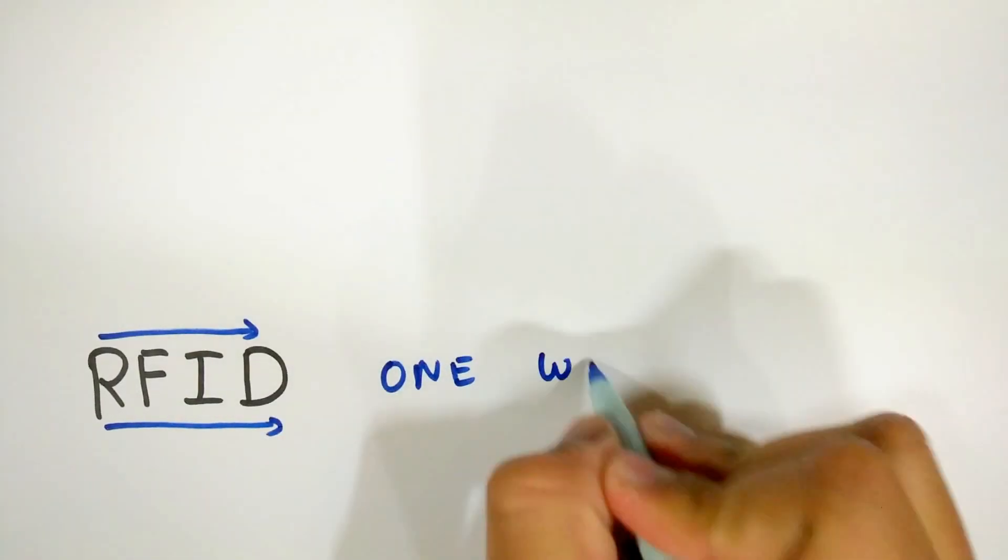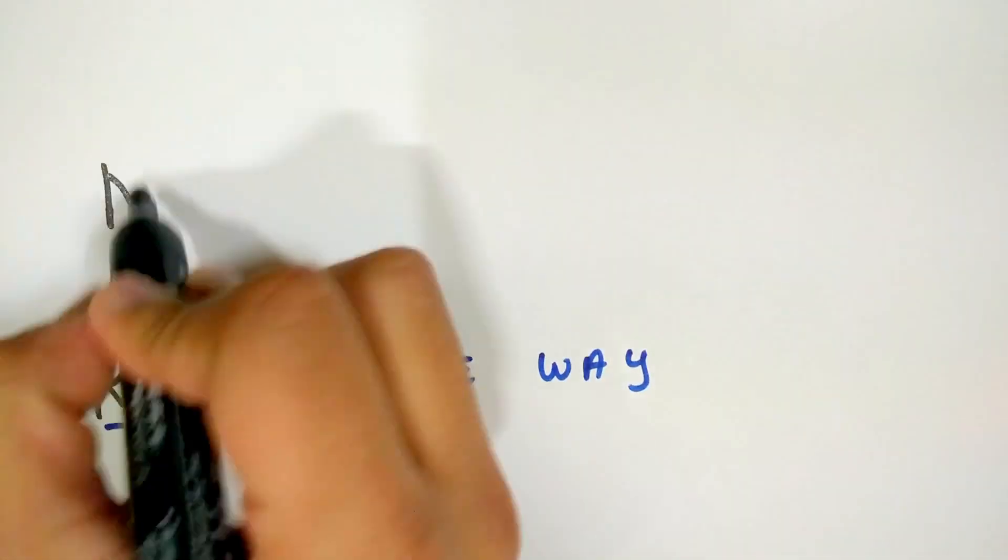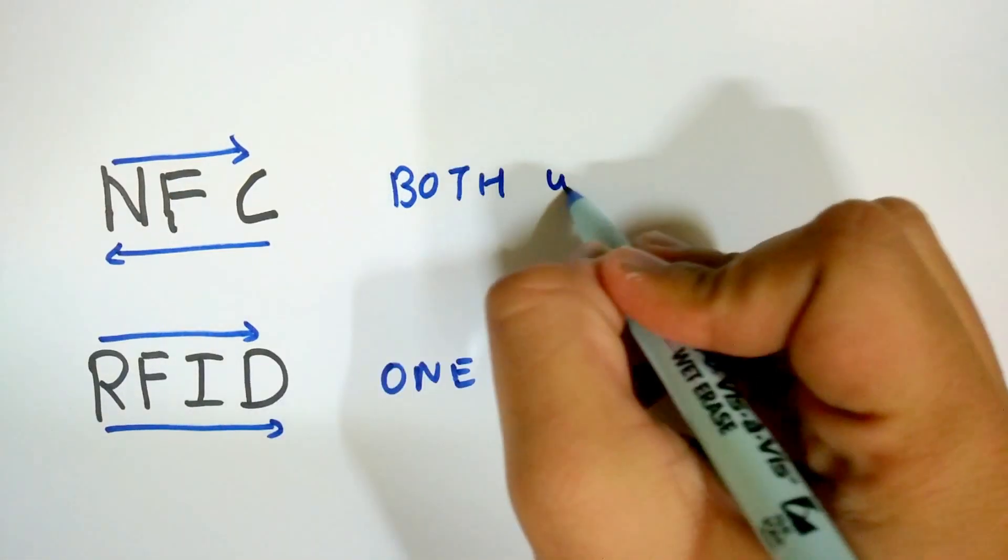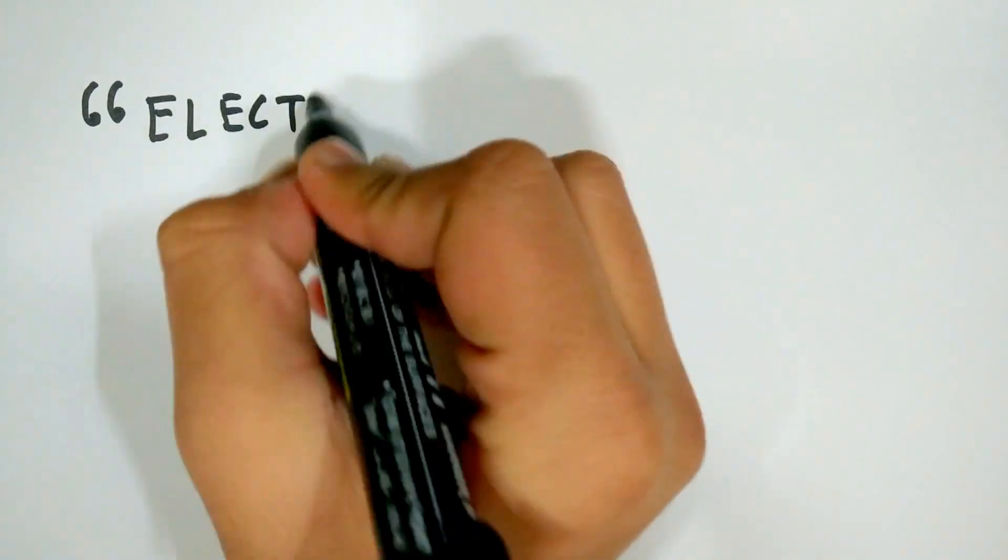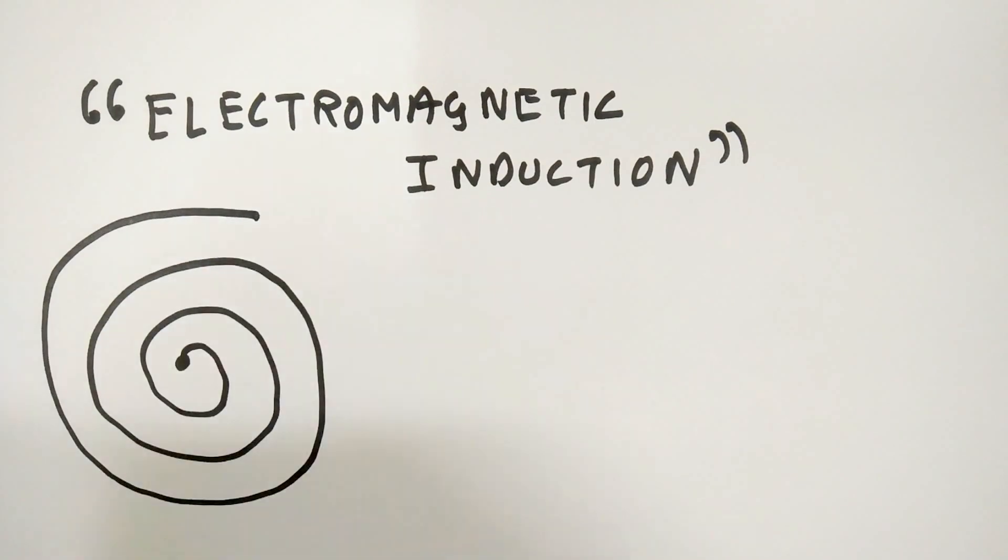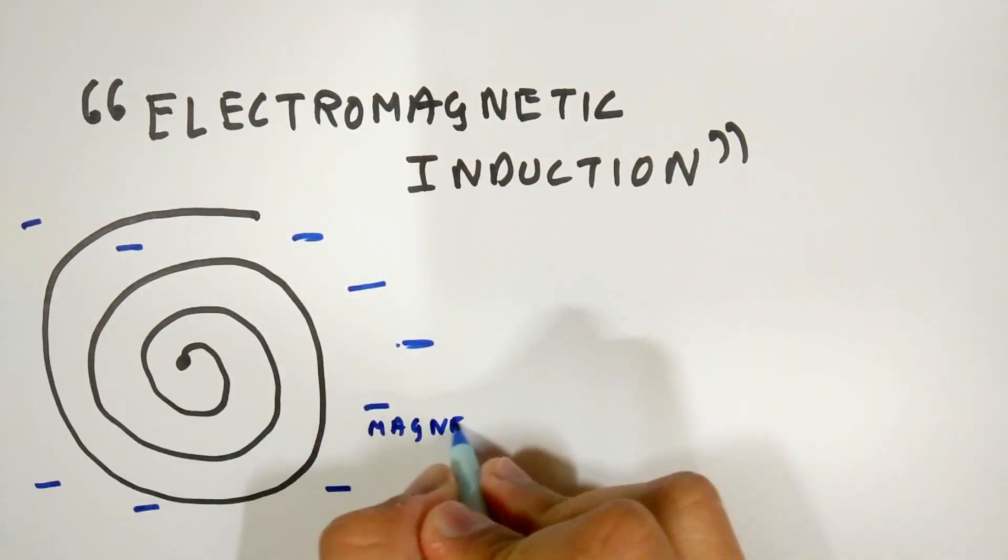NFC is based on radio frequency identification or RFID technology, which was one-way communication, while NFC is communication that can work both ways. NFC works on electromagnetic induction. A changing magnetic field near a coil causes current to be induced in the coil.